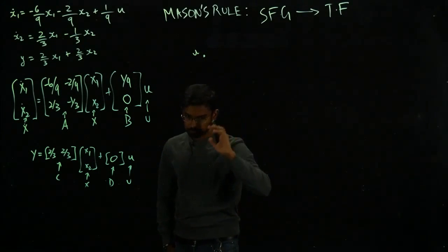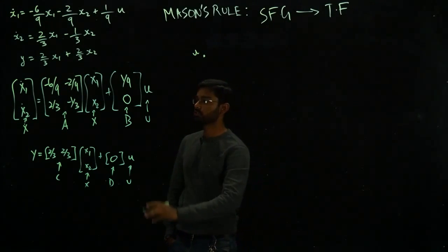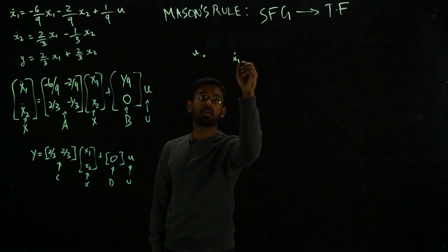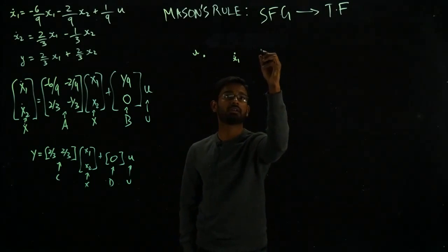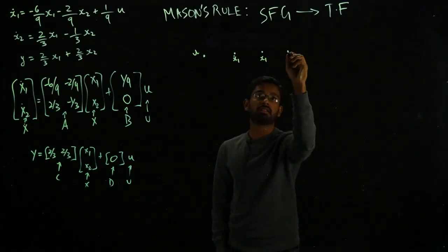I am going to start with the input. Obviously the input is what is going to be given to the system. Let me mark this as x₁ dot, this here as x₁, this here. This will become more clear.